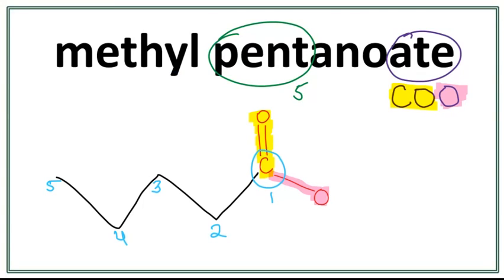Let's work on the side chain now, which is methyl — from alcohol. The side chain always attaches on the oxygen. So we have a methyl, which is just CH3, only one carbon, and we're going to attach it with this oxygen right here.